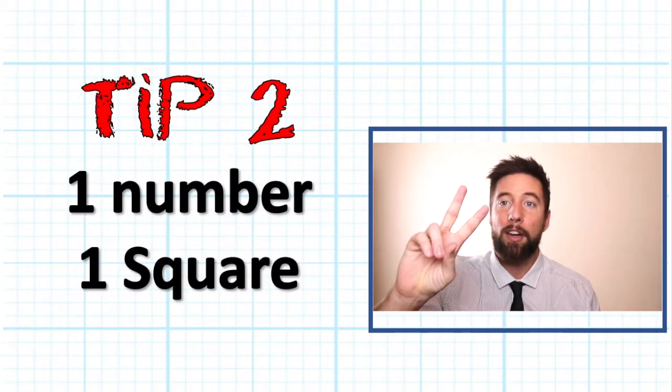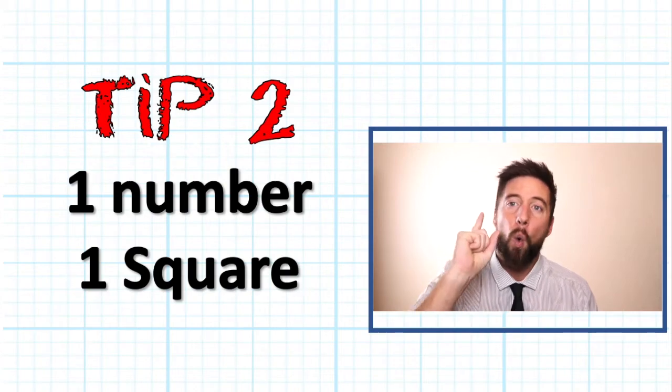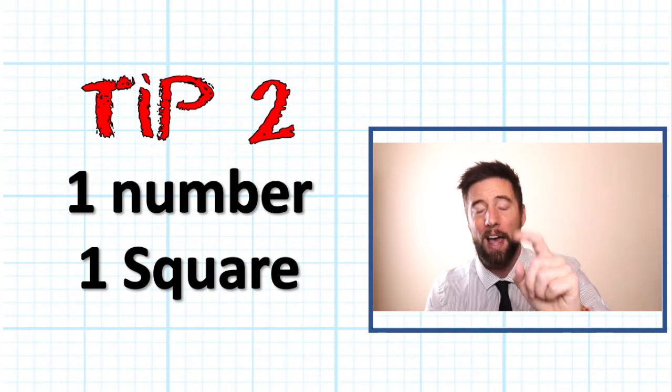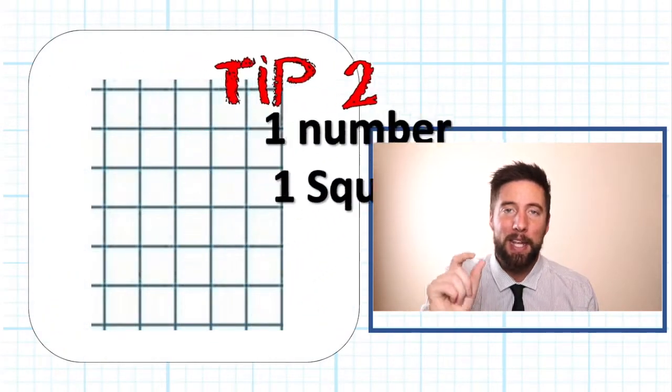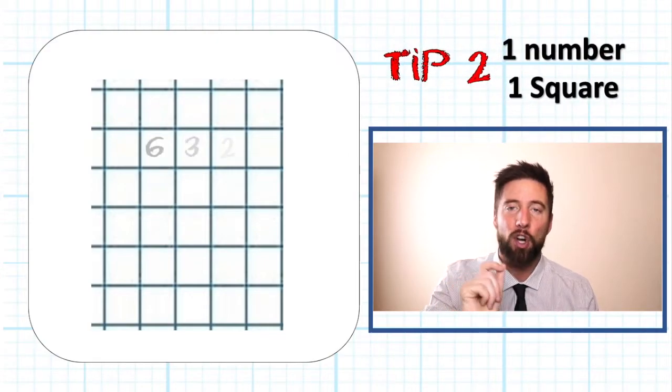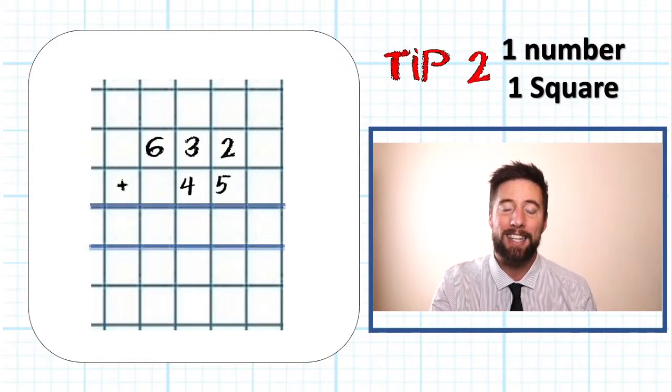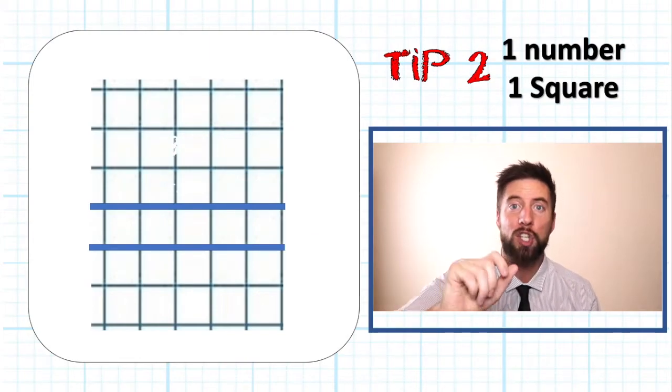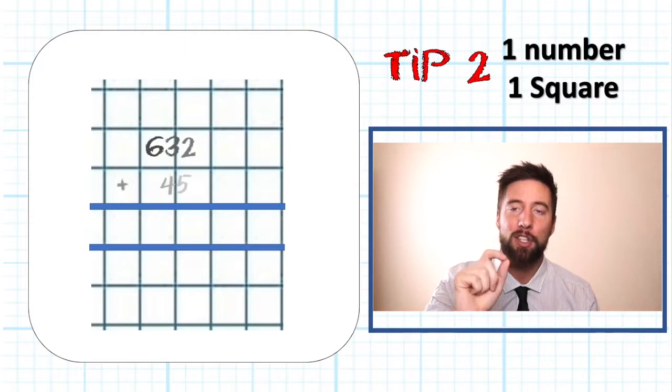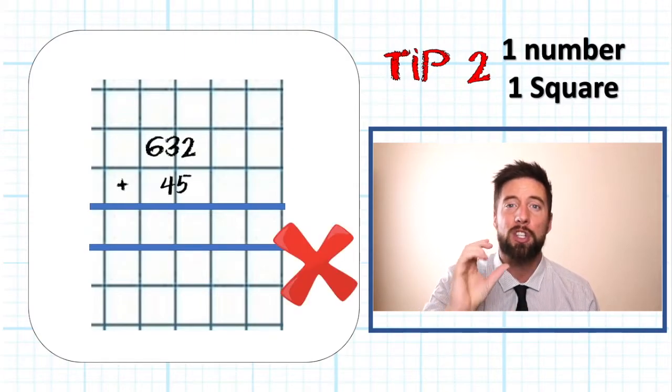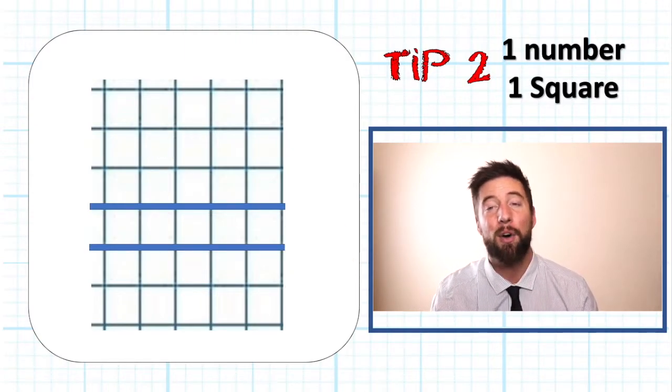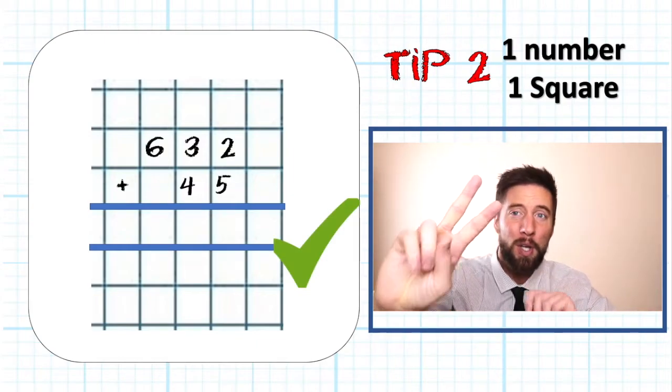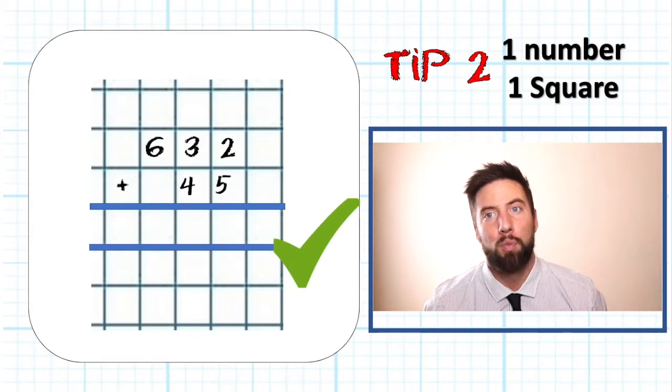Tip number two, and if you are at school you will hear this all the time, one number, one square. The trick to maths is being organized, being neat and organized. The more organized you are, the less likely you are to make those small mistakes. So put one number in one box. You will notice a big difference in your presentation and you will notice a big difference in the small mistakes you are now avoiding. Tip number two, one box, one number.